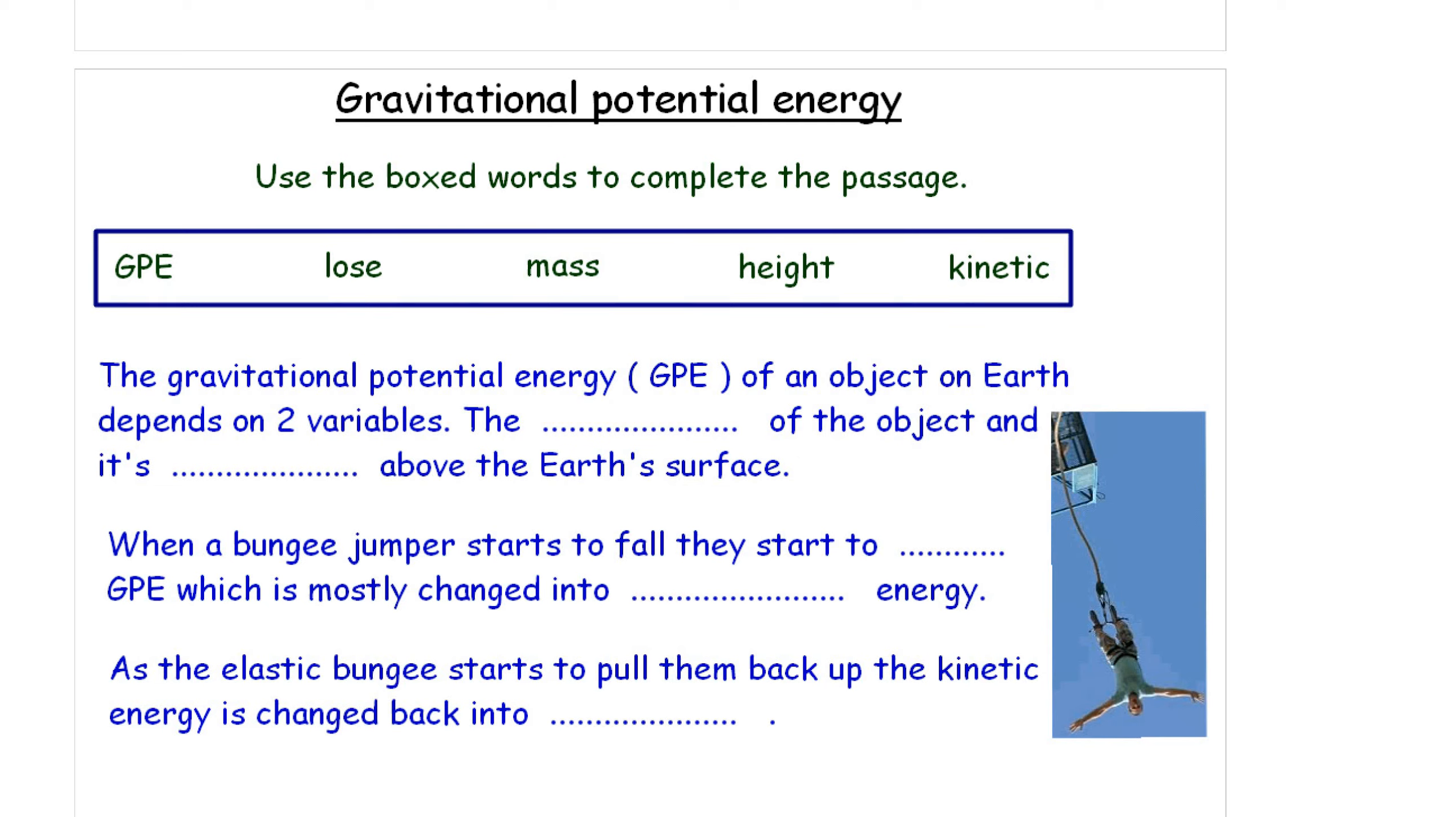GPE, use the box words to complete the passage. I'm going to stop the video for a second, see if you can't fill in the correct words yourself. Here we go with the answers. The gravitational potential energy of an object on Earth depends on two variables. The mass of the object and its height above the Earth's surface. When a bungee jumper starts to fall, they start to lose GPE, which is mostly changed into kinetic energy. As the elastic bungee starts to pull them back up, the kinetic energy is converted, changed back into GPE.